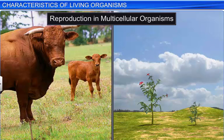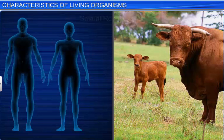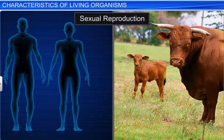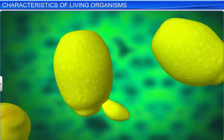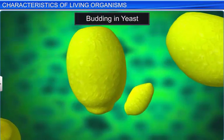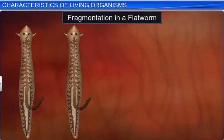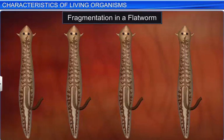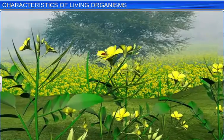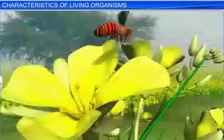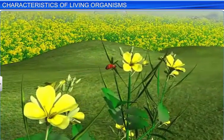These organisms reproduce either sexually or asexually. Sexual reproduction can be seen in higher organisms like man and animals. Asexual reproduction can be seen in lower organisms, through budding as seen in yeast, or through fragmentation as observed in flat worm. However, certain organisms, such as sterile worker bees, are not capable of reproducing.